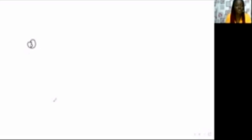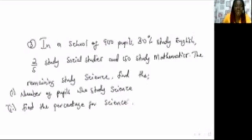Example three: in a school of 900 people, at most 30% study English, 2 out of 5 study Social Studies, and 150 study Mathematics. The remaining study Science. Find: (i) the number of people who study Science, and (ii) the percentage for Science. This is a word problem — you have to analyze it and translate it into mathematical statements.